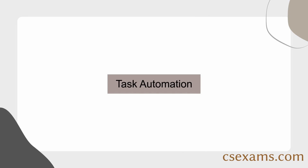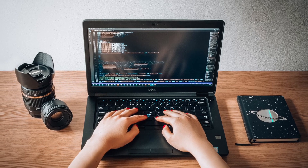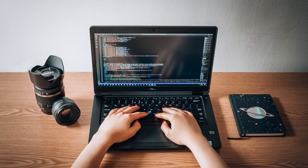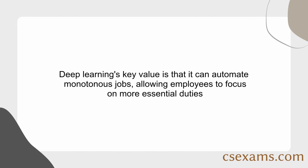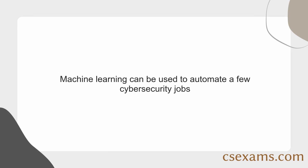Deep learning can be used for a variety of task automation tasks. For example, it can automatically identify and classify objects in images or videos. Deep learning's key value is that it can automate monotonous jobs, allowing employees to focus on more essential duties. Machine learning can be used to automate a number of cybersecurity jobs.